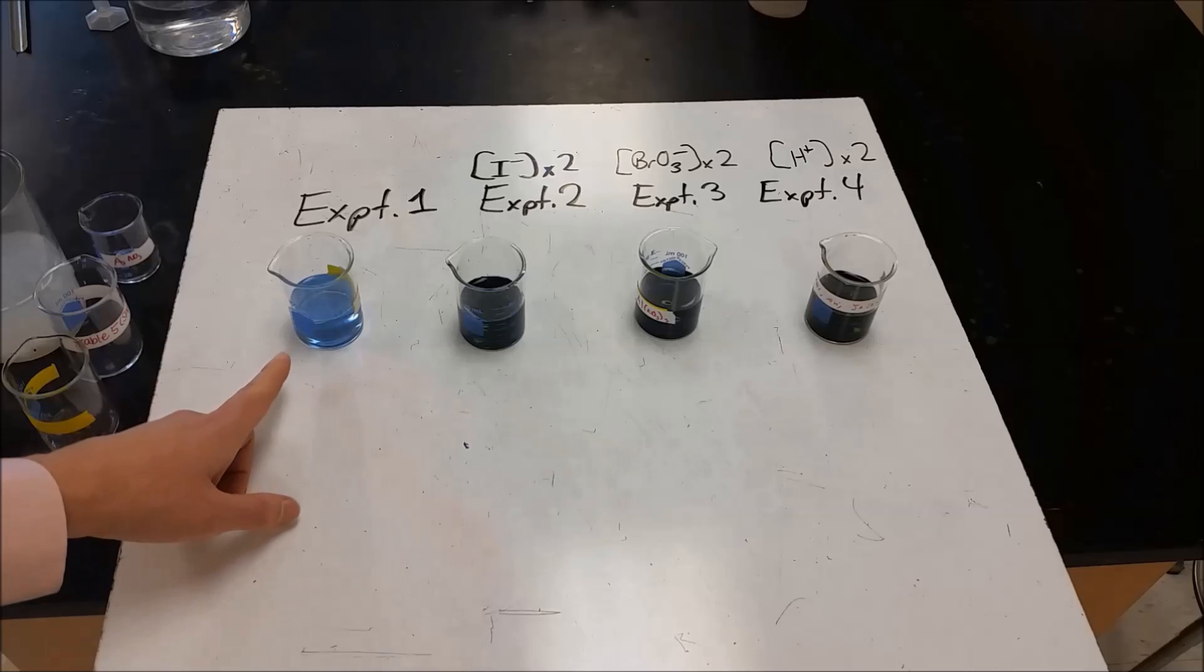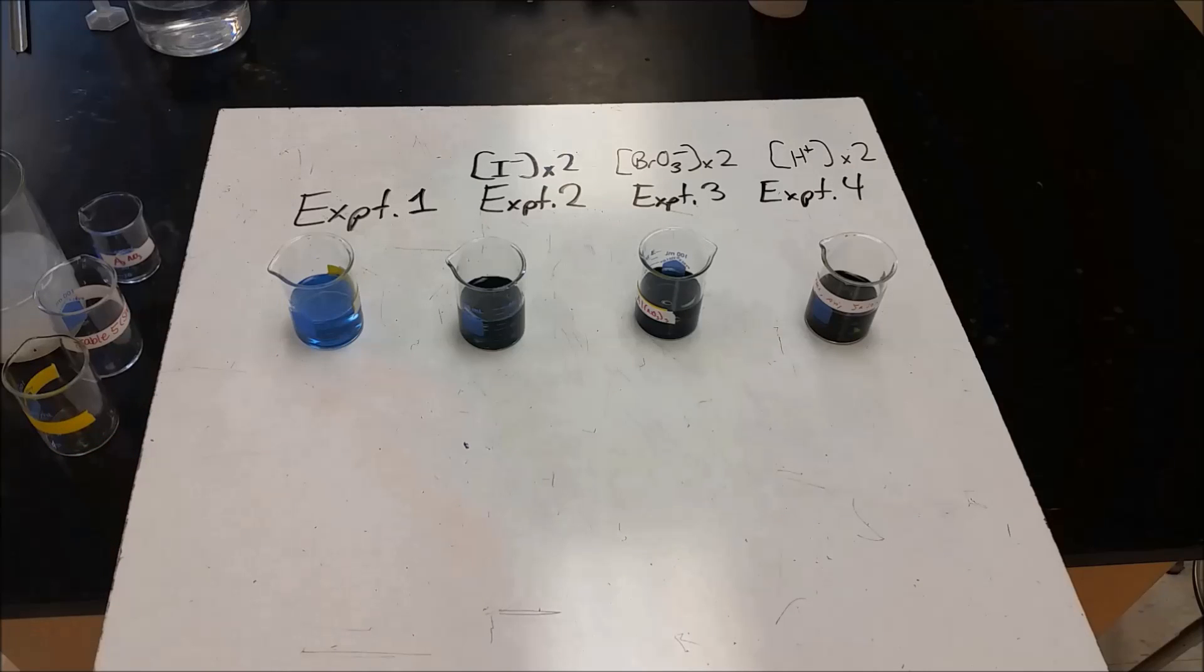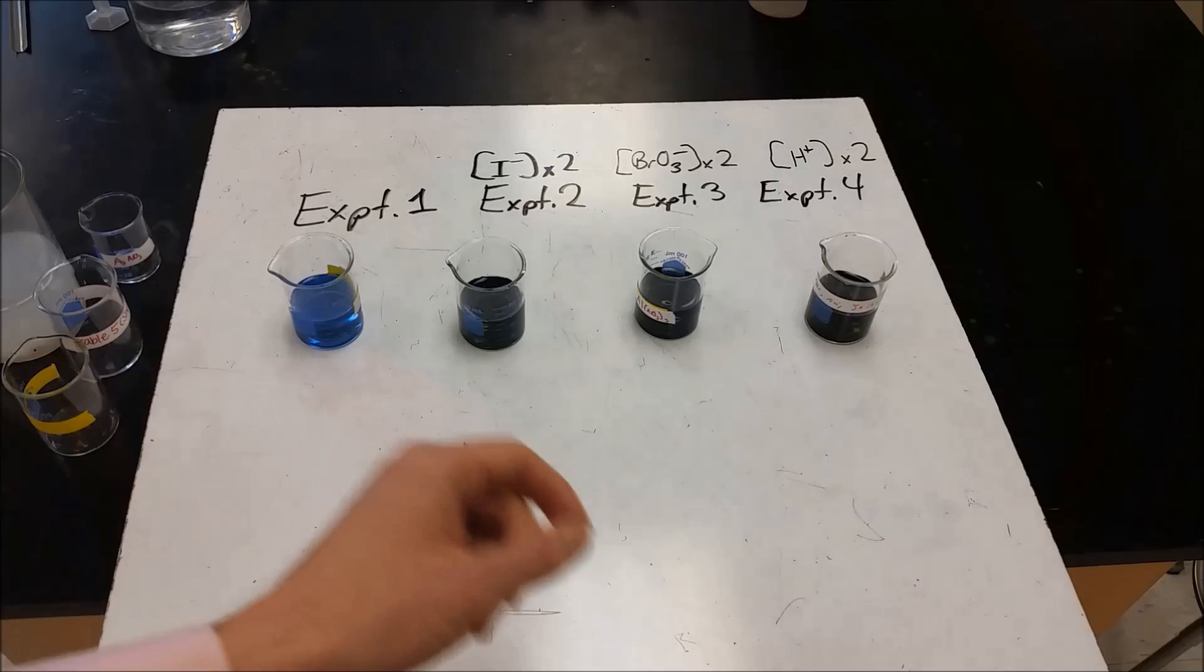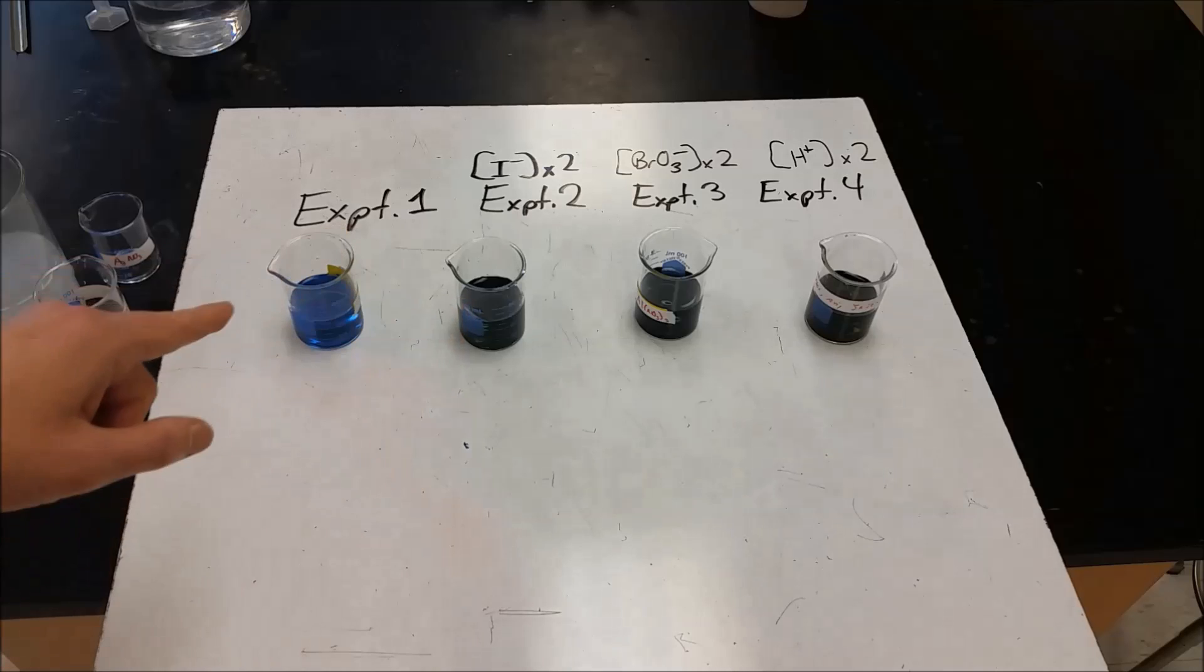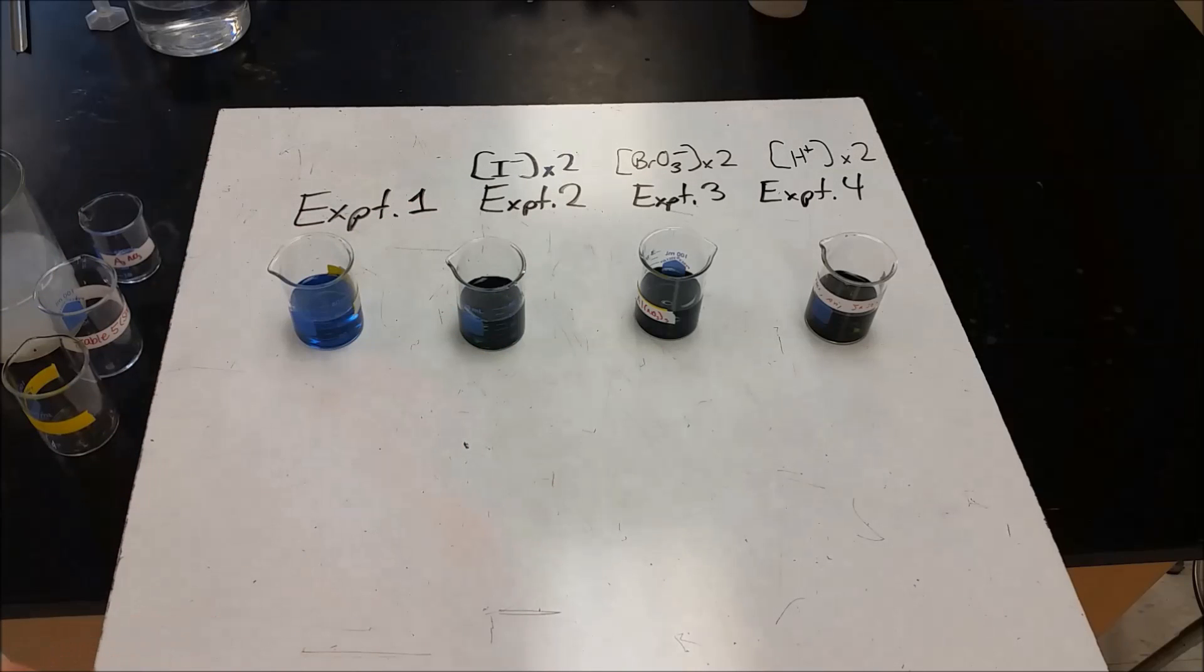And we're finally getting to a blue color here in experiment one. So from the time that it took, we can now figure out the rate of that reaction, and then we can work backwards and we can figure out the relative rates, depending on when we doubled all of these concentrations, to figure out the reaction orders.